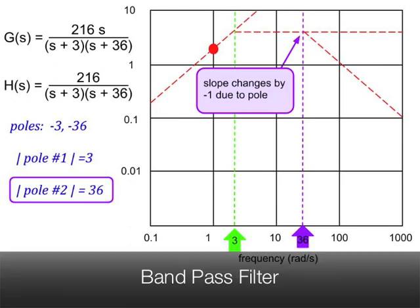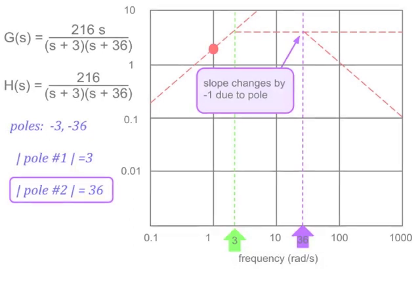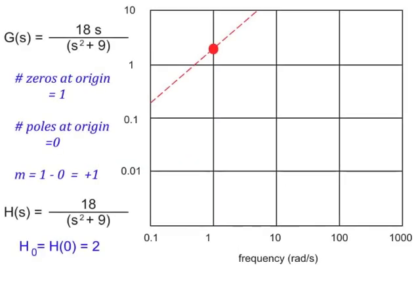That is, it rejects low frequency and high frequency. So far, all the examples we've done have had poles on the real axis. Let's now look at an example with poles on the imaginary axis. The transfer function in this example is G of s equals 18s over s squared plus 9.